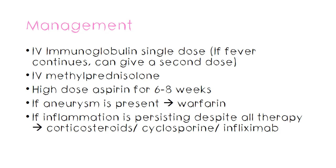If inflammation is persisting despite all other measures, we can use immunosuppressants such as corticosteroids, cyclosporine, or infliximab. Cyclosporine is usually used to reduce cell proliferation, and infliximab is a monoclonal antibody with the same action.